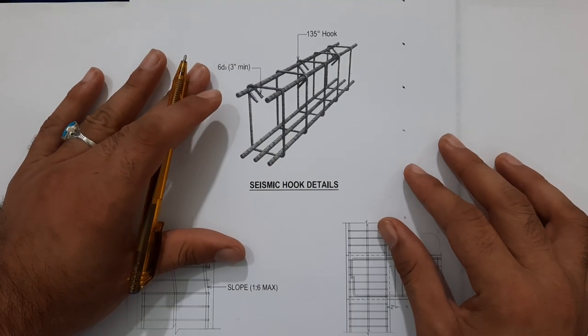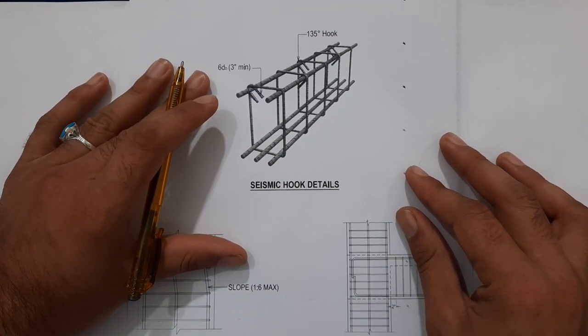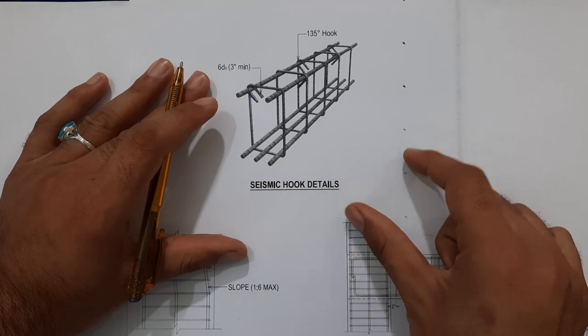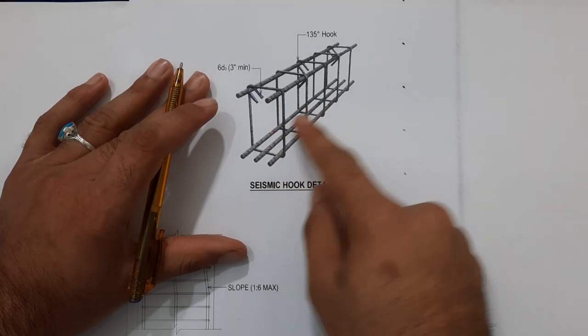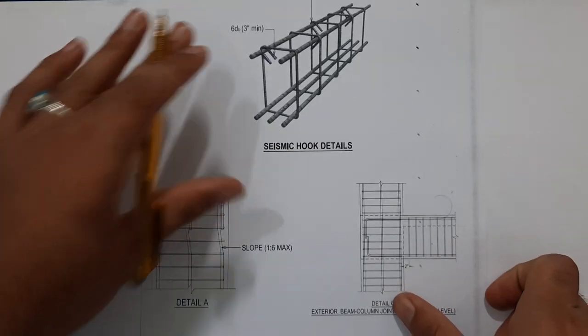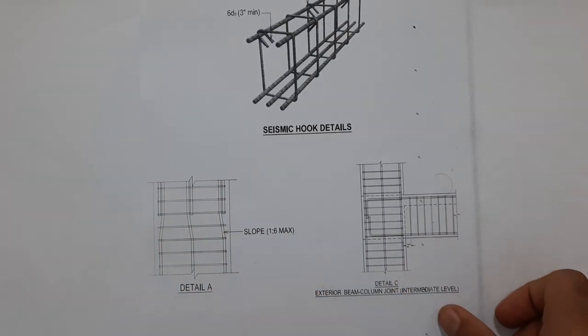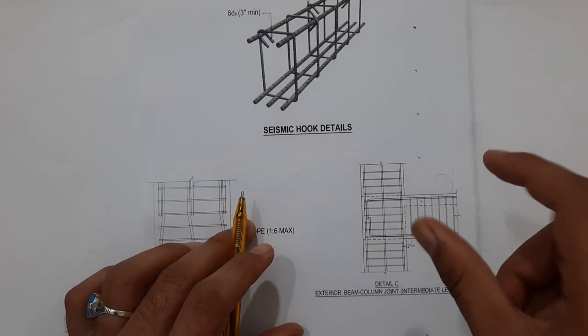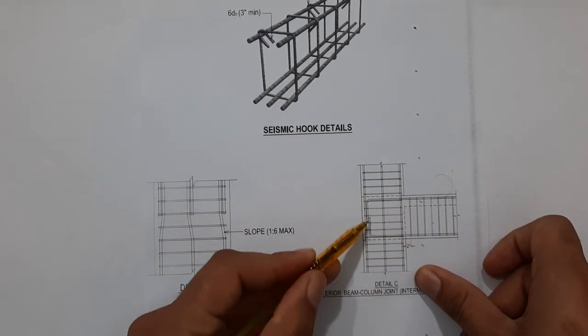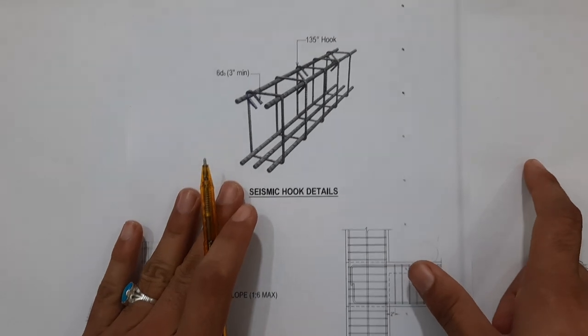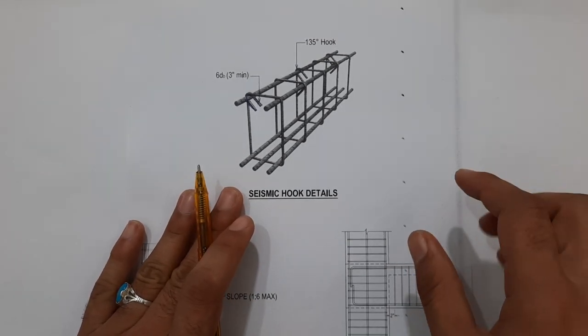Assalamualaikum beautiful people. Today in this short video lecture I will guide you about stirrup hook details for plinth and top beam. Second, lapping joint for column. Third, beam and column joint. This is a very important topic, so watch this video till the end to learn something new.